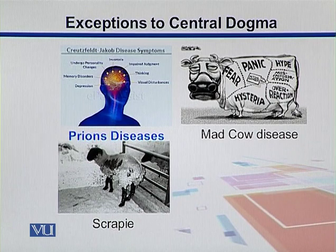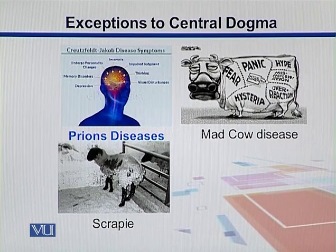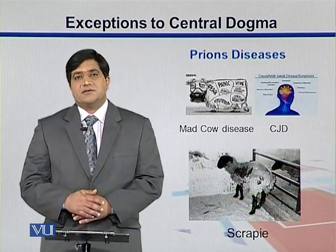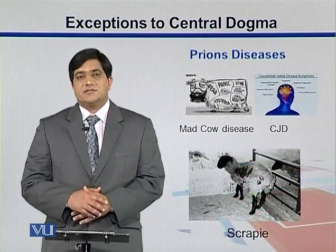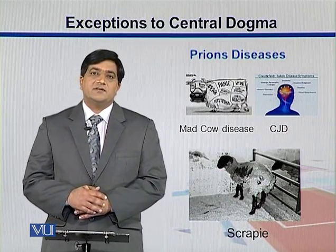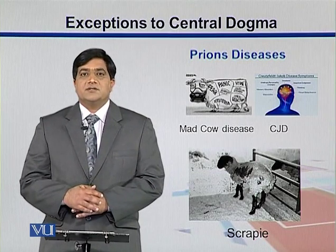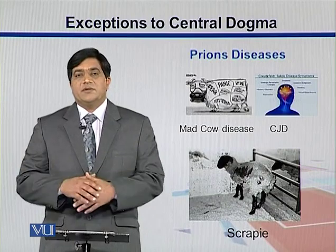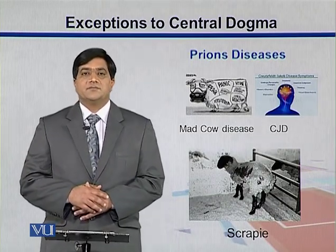One such human disease is CJD, Creutzfeldt-Jakob disease, which also involves neurological disorders. Scrapie is another prion disease found in sheep. In conclusion, the central dogma is not a true dogma — there are exceptions such as reverse transcription, as well as prions, organisms in which proteins can also play the role of hereditary materials.